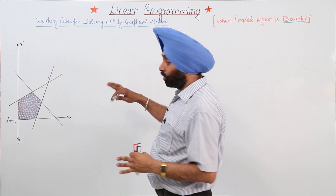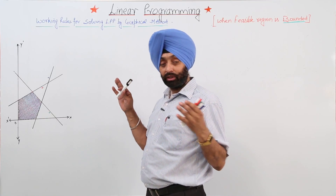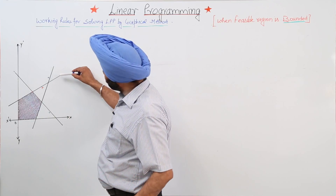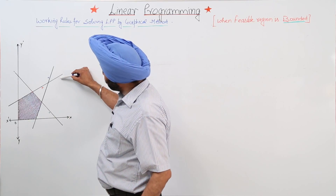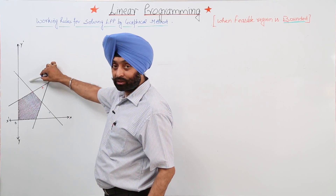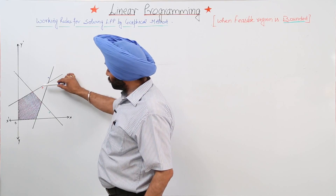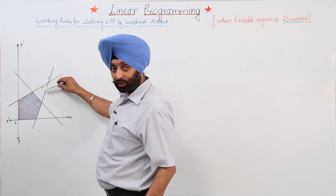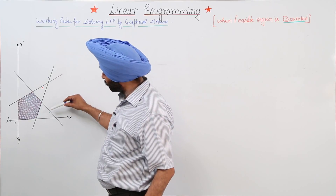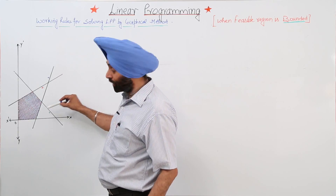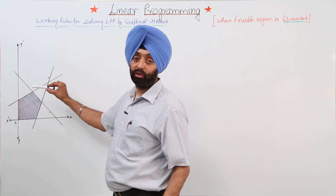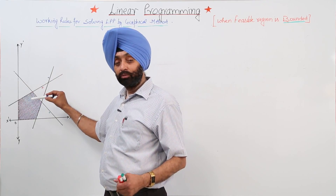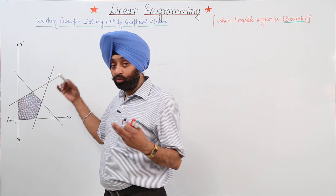When we have all the shaded parts — all the lines which we are shading — for example, this one, this one, and this one — these are the 3 constraints. The shading for this constraint is with a red line, this one with blue, and this one with green, and this becomes a bounded area. This is called a feasible bounded area.